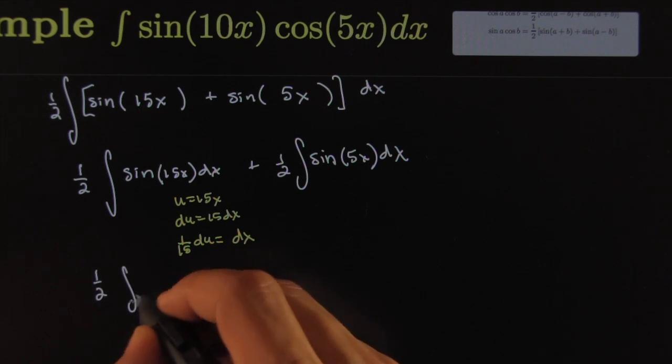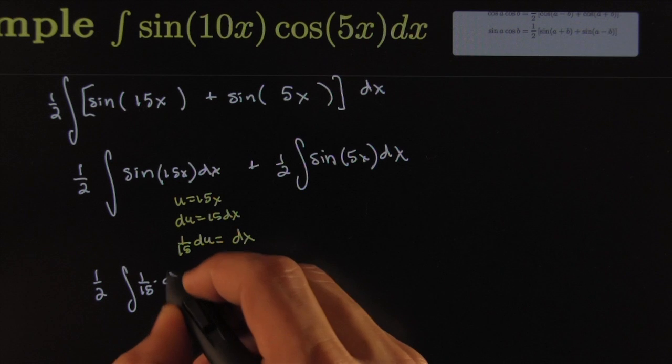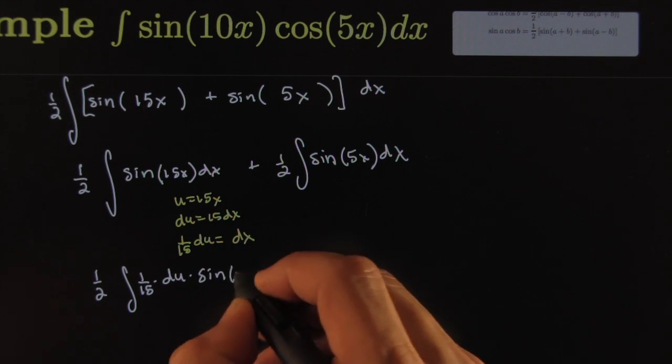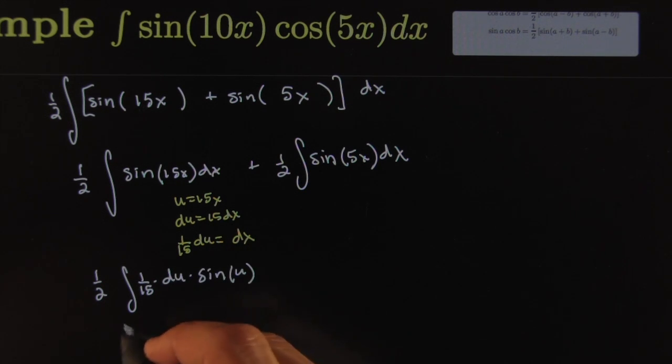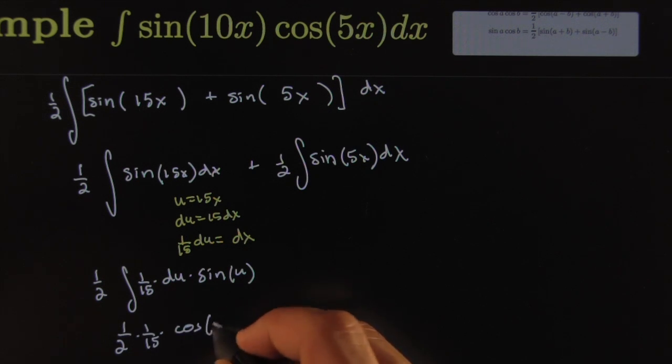This would become one-half integral of one over 15 du times sin(u), which of course would become one-half times one over 15 times cosine of u. The derivative of cosine is negative, so I could do a negative there - negative cosine.